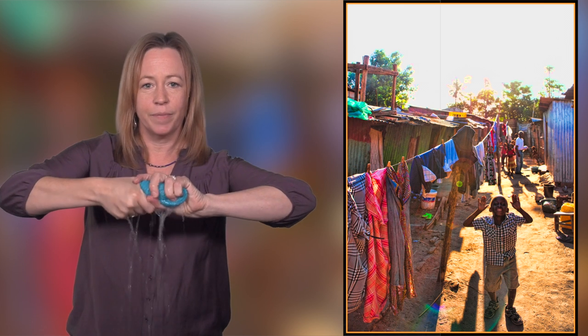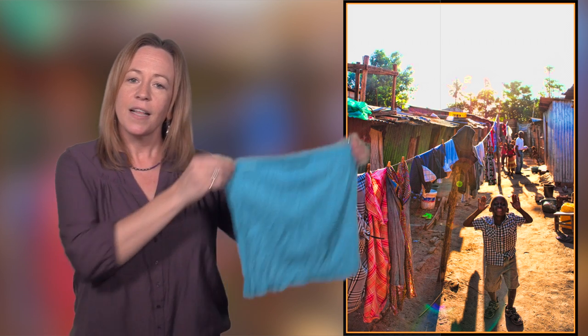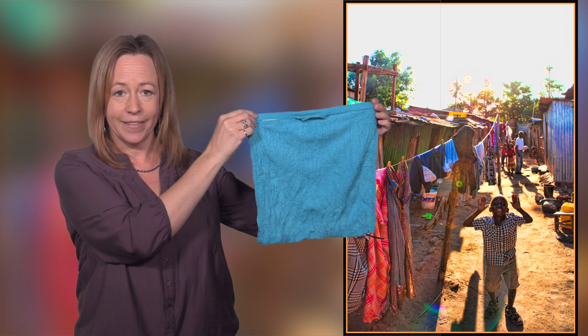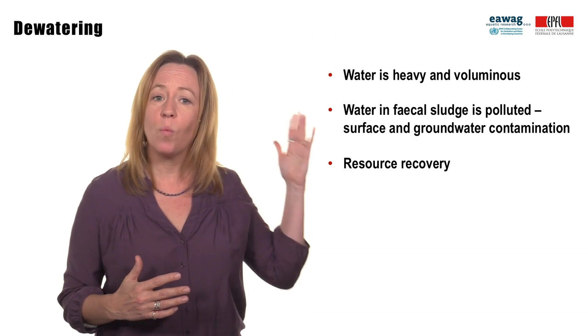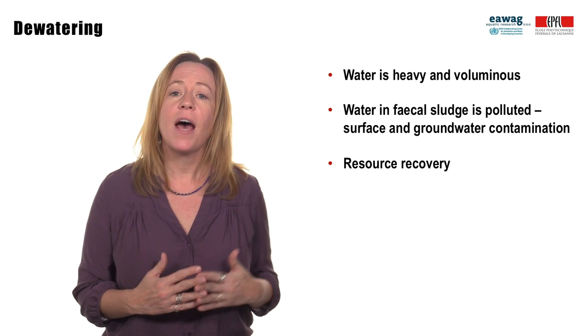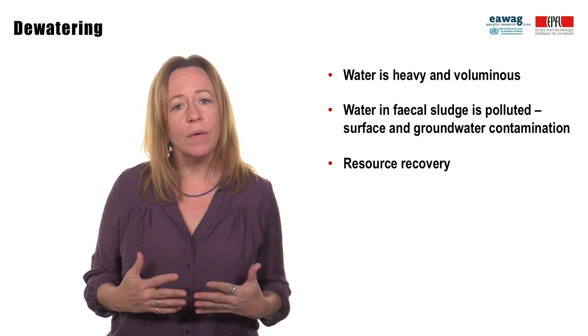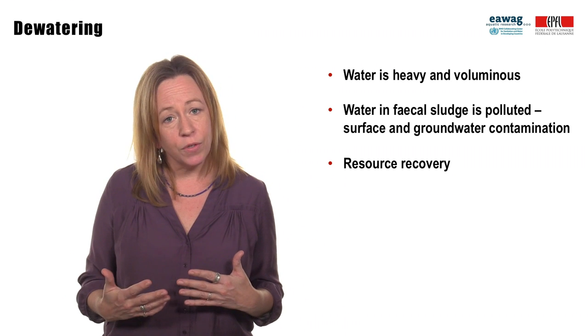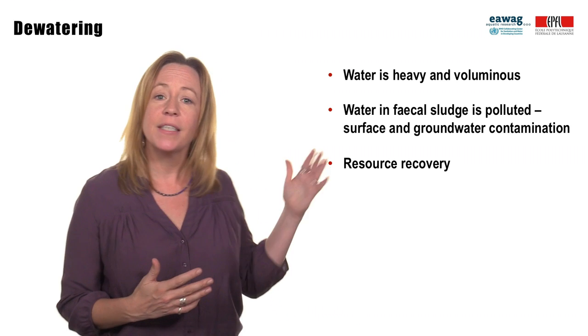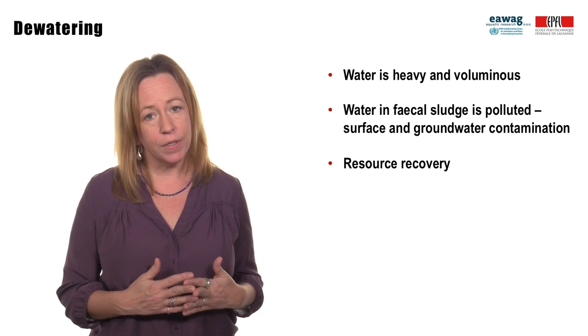The first one is dewatering. Fecal sludge is typically over 90% water, so dewatering to separate the liquid and solids is very important. Dewatering is the removal of more easily separated water, like wringing out a dripping wet towel, whereas drying is the further removal of water that is bound with the solids, like then hanging the towel on a laundry line. Dewatering is important because water is heavy and expensive to transport. Prior to effluent discharge into the environment, solids and liquids need to be separated to ensure adequate treatment can take place for public and environmental health, and dewatering is typically required for resource recovery.